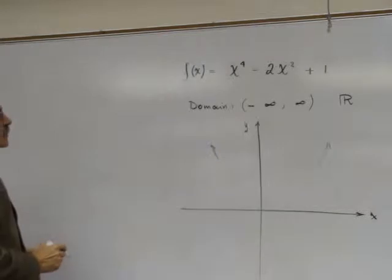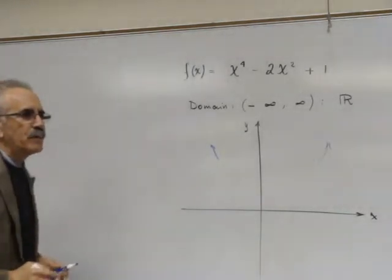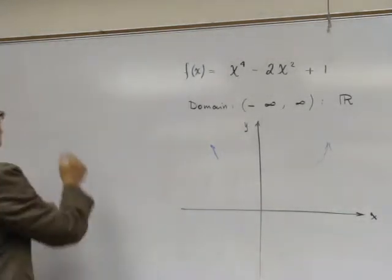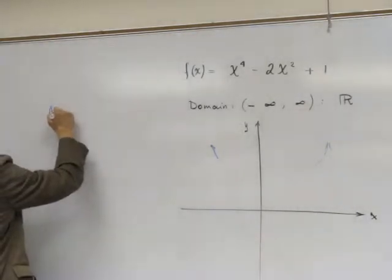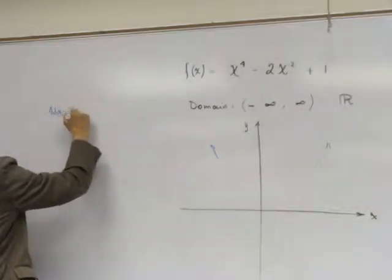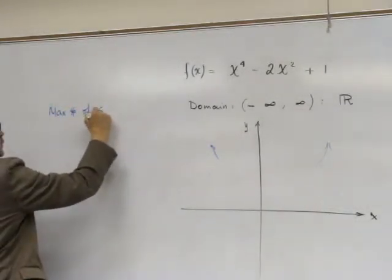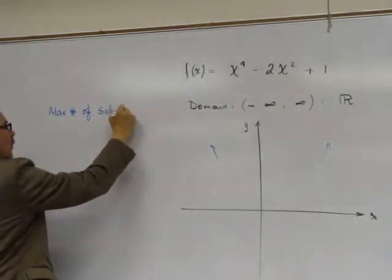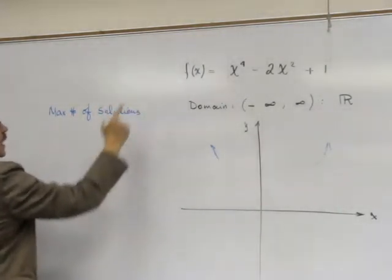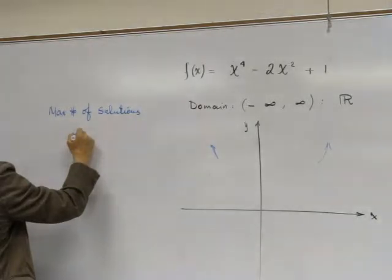Now, how many possible solutions maximum? Number of solutions: n which is 4, correct?